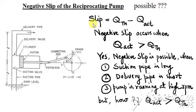As you know, slip is the difference between actual discharge and theoretical discharge. Mathematically, slip equals Q theoretical minus Q actual.